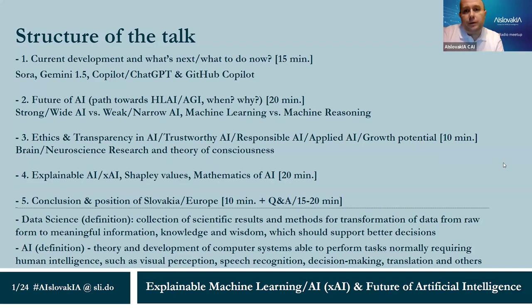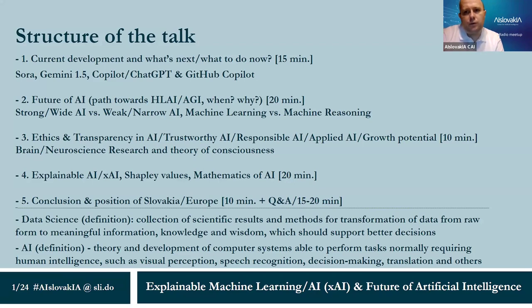We'll start with definitions. I will cover not just AI but also data science itself. Data science is a collection of scientific results — AI is one area of science used within data science. We try to describe these models and systems, how they operate, how we can model them, and how to transform raw data into meaningful information useful for us. We can then collect knowledge and hopefully wisdom, and based on that wisdom, we can better decide in day-to-day life.